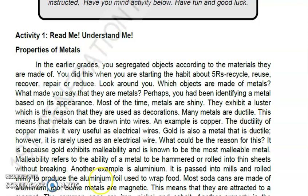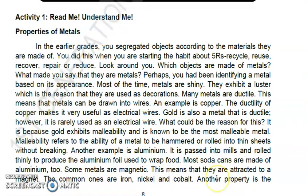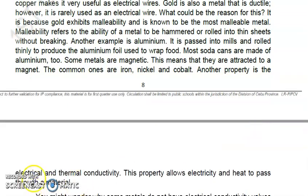Ductile means it can be drawn into wires - an example is copper. Next is malleable or malleability. First lustrous, next is ductility, third is malleability. It has the ability to be hammered or rolled into thin sheets without breaking - example is aluminum. Have you tried using aluminum foil to wrap your food? That's a metal, it's aluminum. Next property, fourth property is magnetic - it means that they are attracted to a magnet. The fifth property is electrical and thermal conductivity. Metals allow electricity and heat to pass through them.